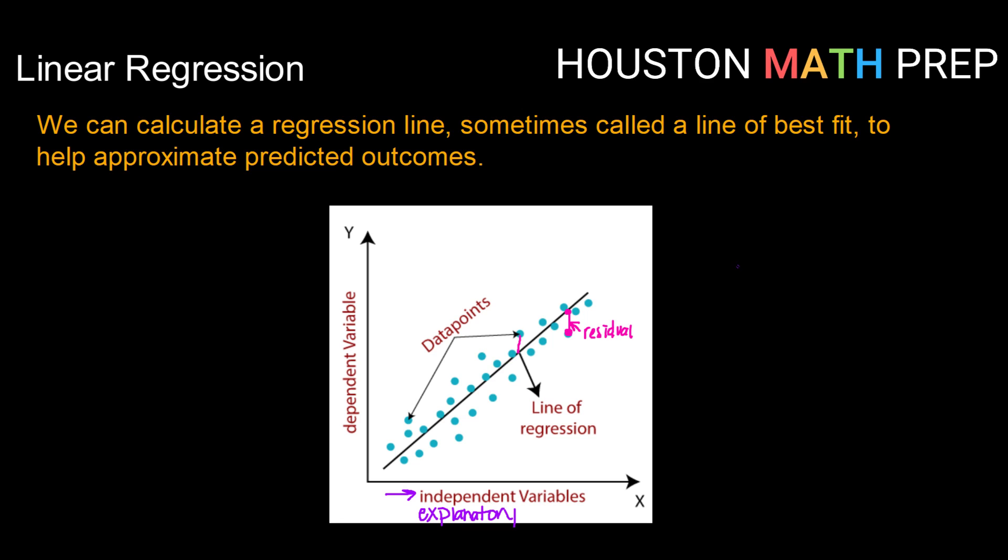Which variable is being changed so that the other one will change? Along our y-axis we're going to have our dependent variable or our variable that is dependent or depends on the change in our independent or explanatory variable. We've got all of our data points graphed. And then the line running through is our line of regression.